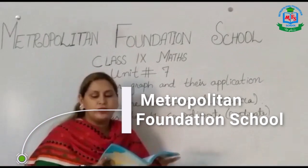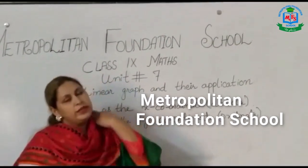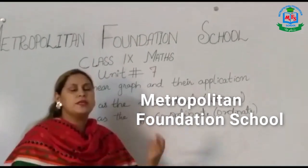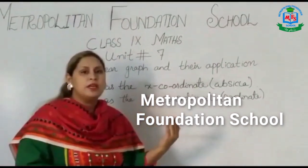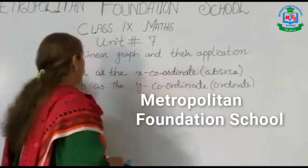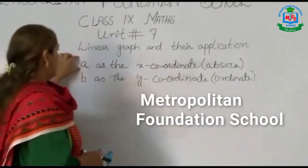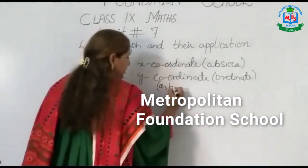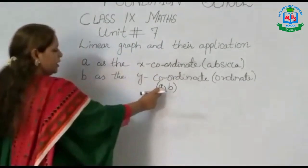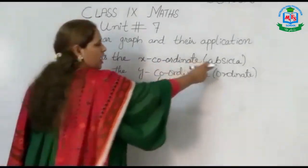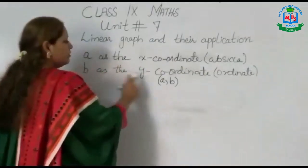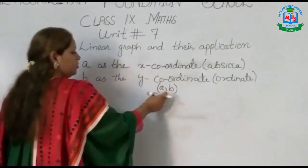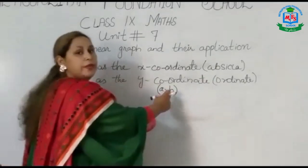Determine the x and y coordinates of the following points. We have two values given in the solution set. We will get the values of x and y coordinates. For the ordered pair (a, b): the value a represents the x coordinate, which we call the abscissa, and the value b represents the y coordinate, which we call the ordinate.